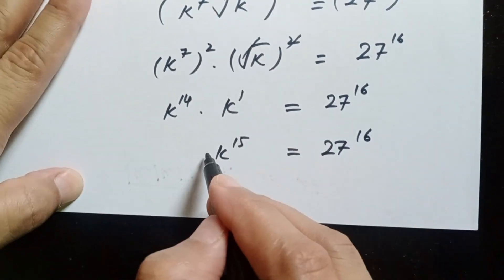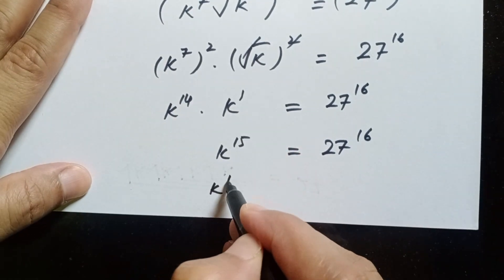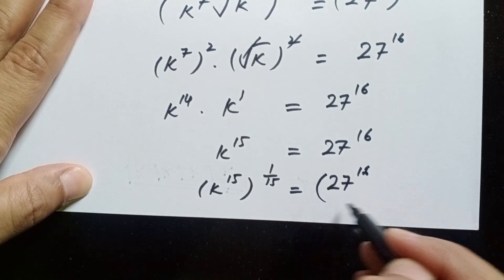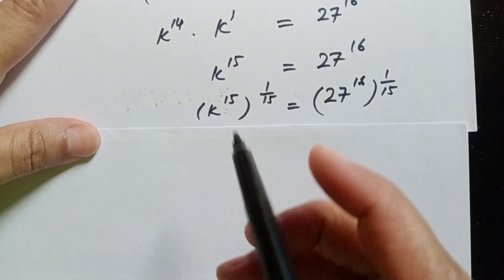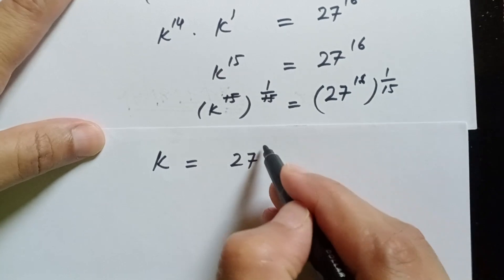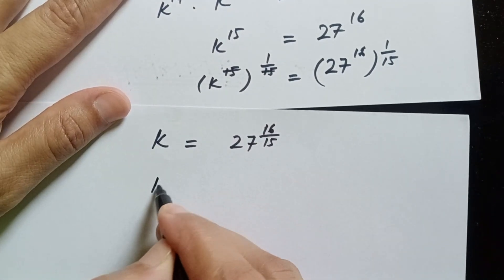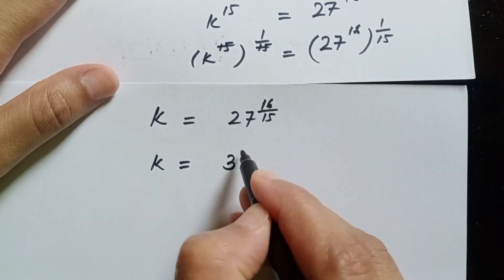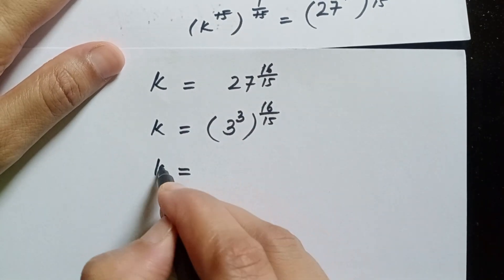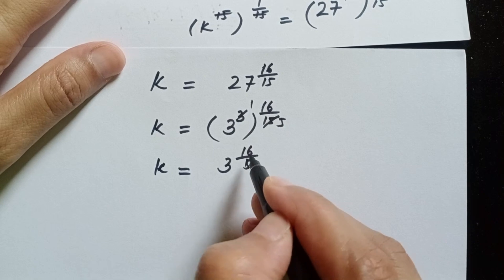So now in the next step we will raise both sides to the power of 1 over 15. We will write k to the power of 15, raised to the power of 1 over 15, is equal to 27 to the power of 16, whole raised to the power of 1 over 15. In the next step, 15 and 15 cancel, and we get k is equal to 27 to the power of 16 over 15.